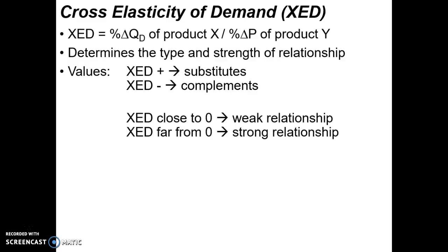Also important is the value. If the XED value is close to zero, then it's a weak relationship, and if the absolute value of XED is far from zero, we have a strong relationship. XED values of 0.5, 0.6, 0.7 signify a stronger relationship than zero, and once we have XED values with an absolute value of one or greater, we have a particularly strong relationship.